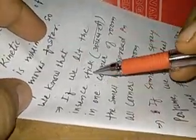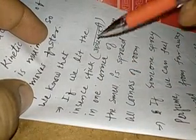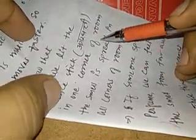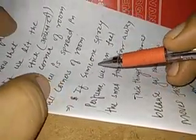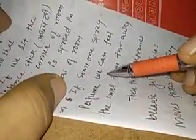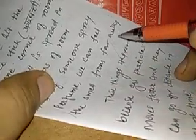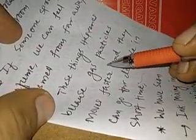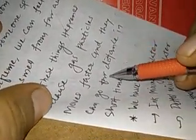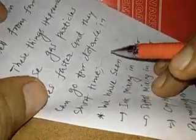The kinetic energy of gases is maximum, so they move faster. For example, if we light an incense stick in one corner of the room, the smell spreads to all corners. If someone sprays perfume, we can feel the smell from far away. This happens because gas particles move faster and can travel a far distance in a short time.